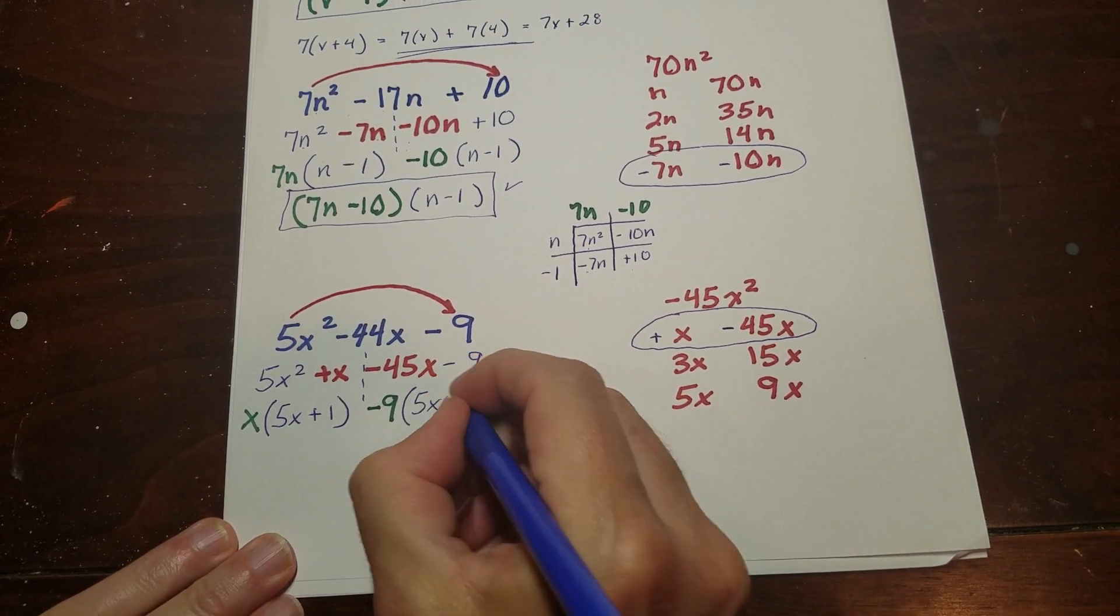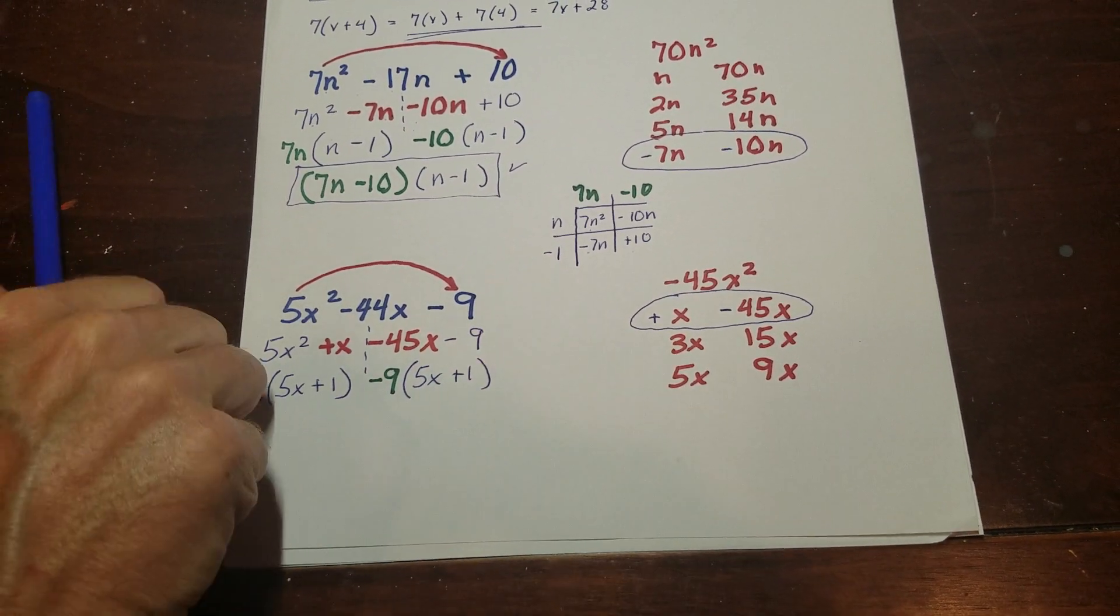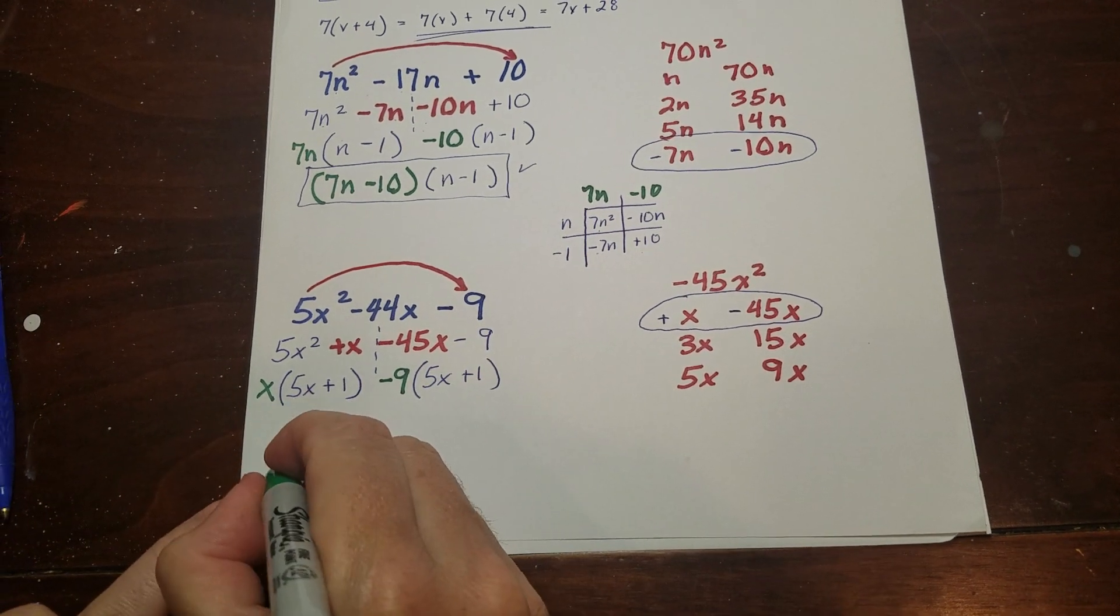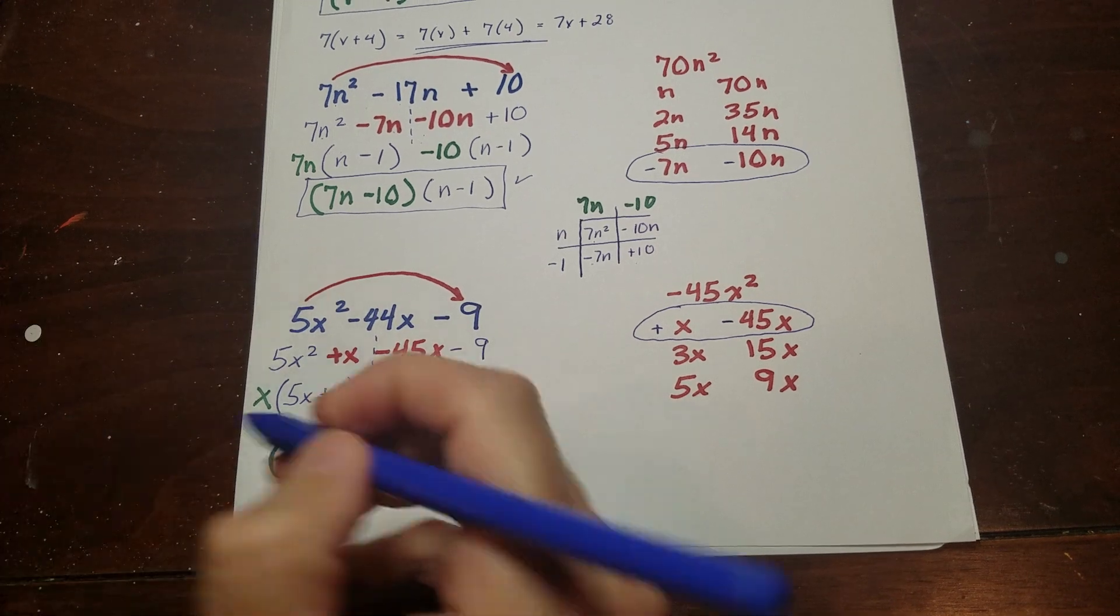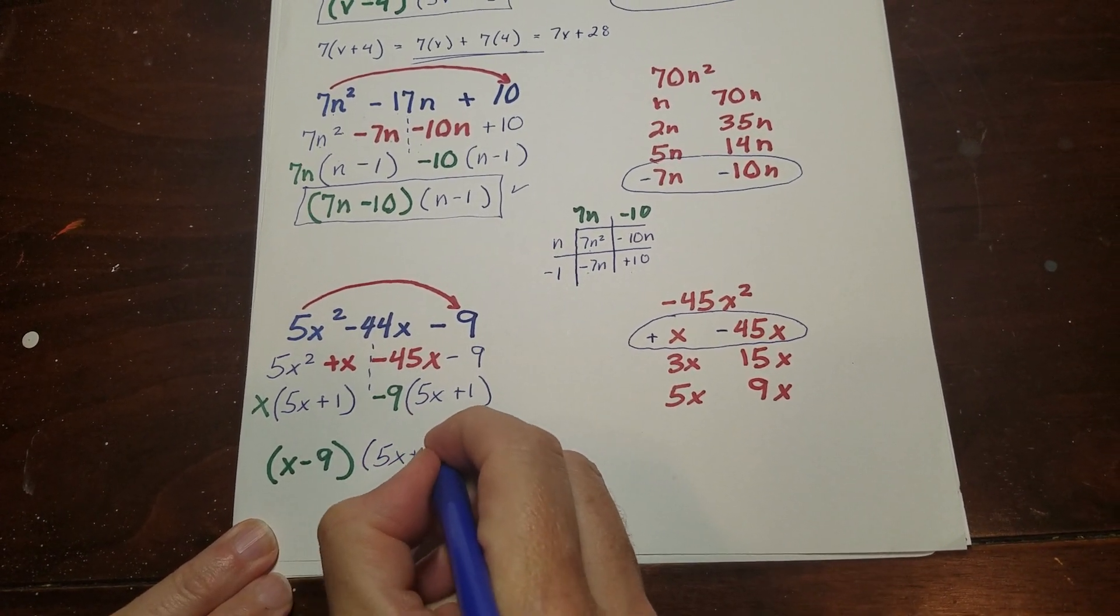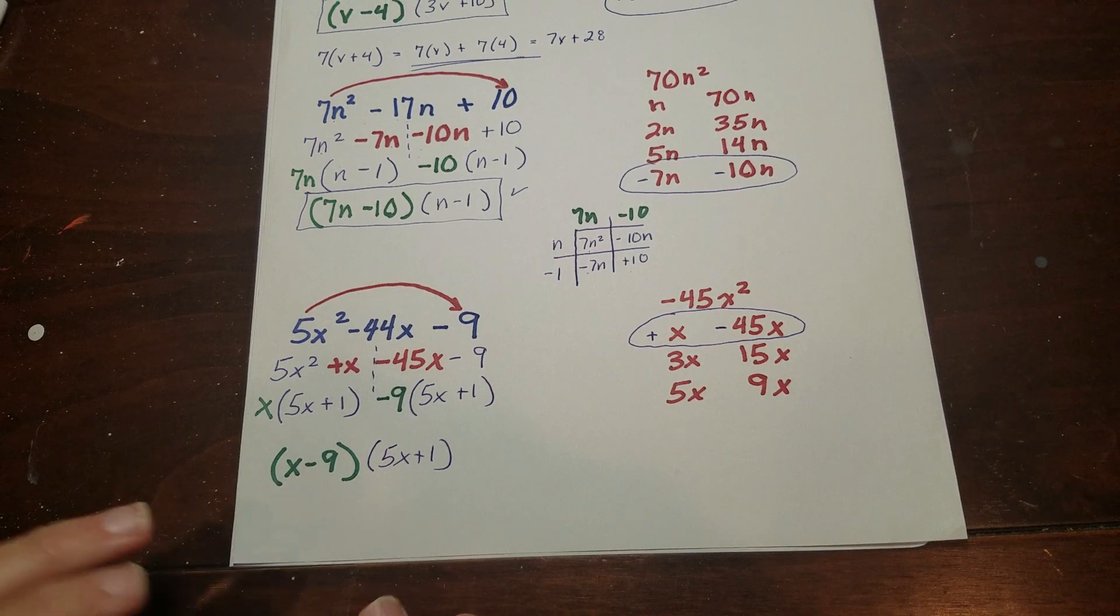And so 5x plus 1 and x minus 9 is one binomial. And 5x plus 1 is the other. Okay, so that's all there is to it.